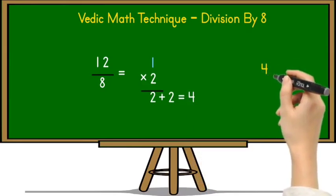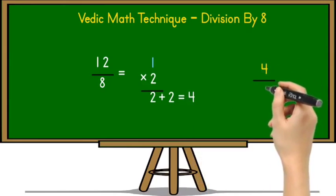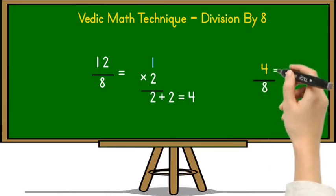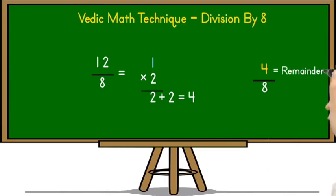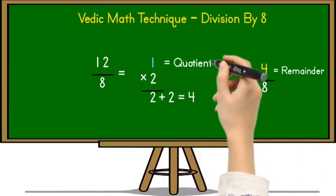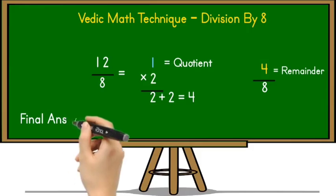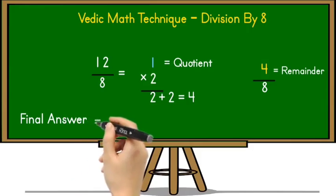Now in the next step, we have to take this 4 and divide it by 8, but it is not possible because 4 is less than 8. So this 4 is the remainder and 1 is the quotient. The final answer is 1 with remainder 4 over 8. If we divide 12 by 8, you will get quotient 1 and remainder 4.